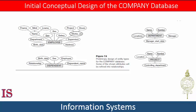Attribute names are enclosed in ovals and are attached to their entity by straight lines. Composite attributes are attached to their component attributes by straight lines. Multi-valued attributes are displayed in double ovals. Here we see the department entity located in multiple locations, and the employee entity whose name consists of a first name, middle initial, and last name.